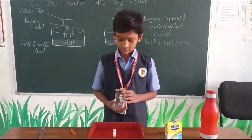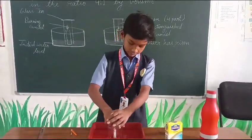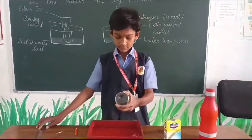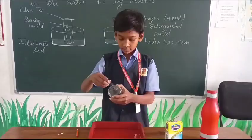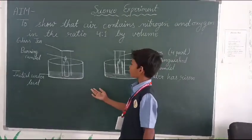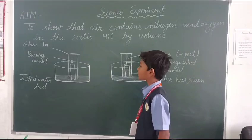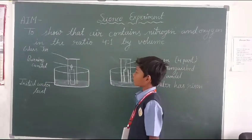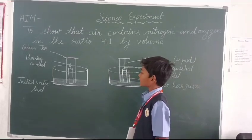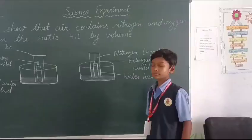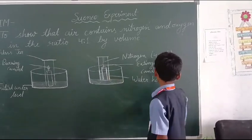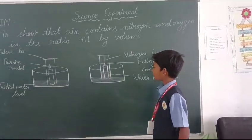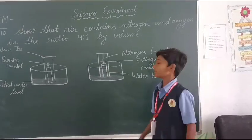Now insert the gas jar into it, and we will see — if oxygen is present in the gas jar, the candle is burning. If oxygen is not present in the gas jar, the candle is off. The water has risen by 1.5 cm in the gas jar.